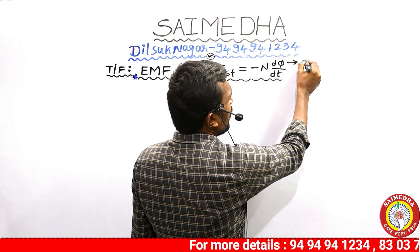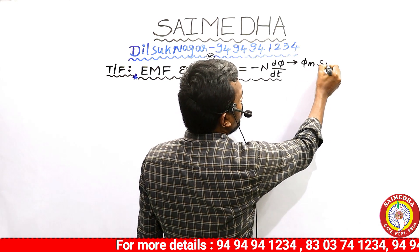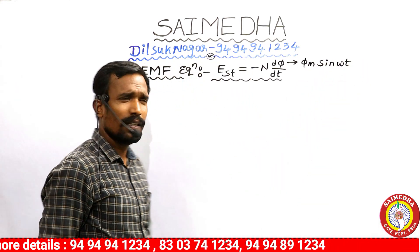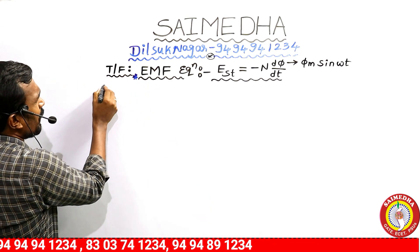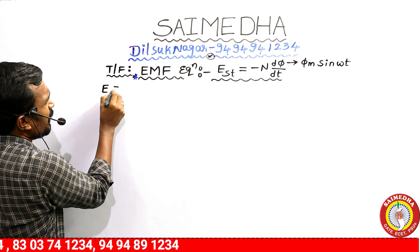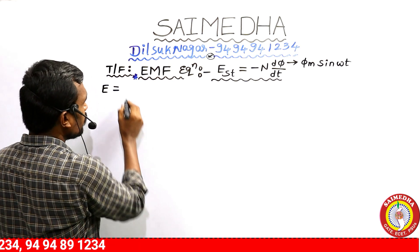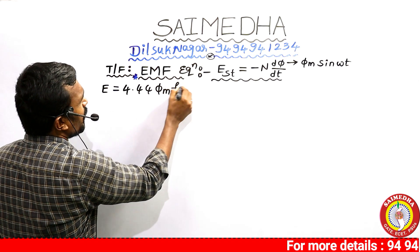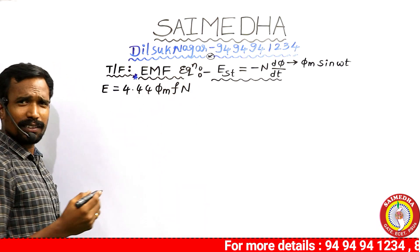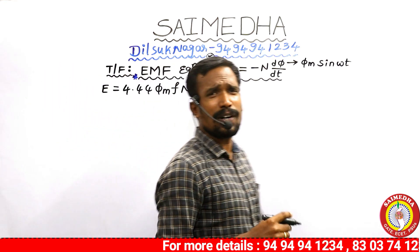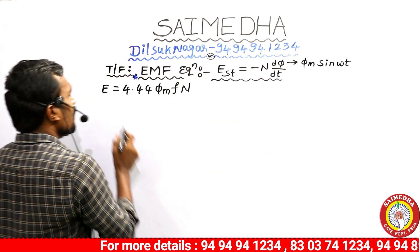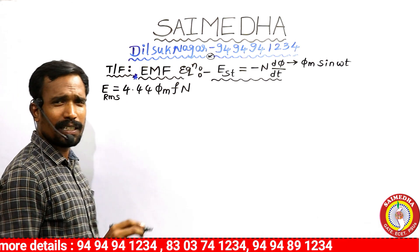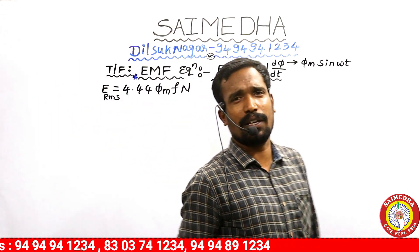Flux: Φ = Φm · sin(ωt). Substituting, we get E = 4.44 · Φm · F · N. This is the transformer's actual EMF equation — the RMS value of the EMF equation.